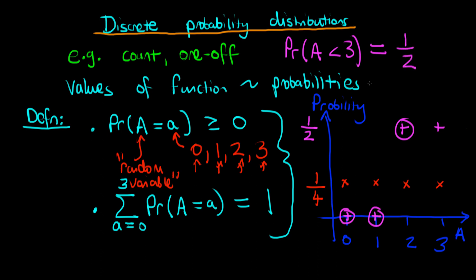In summary, discrete distributions are mathematical functions that associate potential outcomes with probabilities. Those outcomes could be a count of something, or things like measuring a one-off event — does it occur or not? For a distribution to be defined as a discrete probability distribution, it must satisfy two conditions: the probability of any particular value must be greater than or equal to zero, and the sum over all potential probabilities must equal one. Once defined, we can use the distribution to calculate probabilities of sets of events.